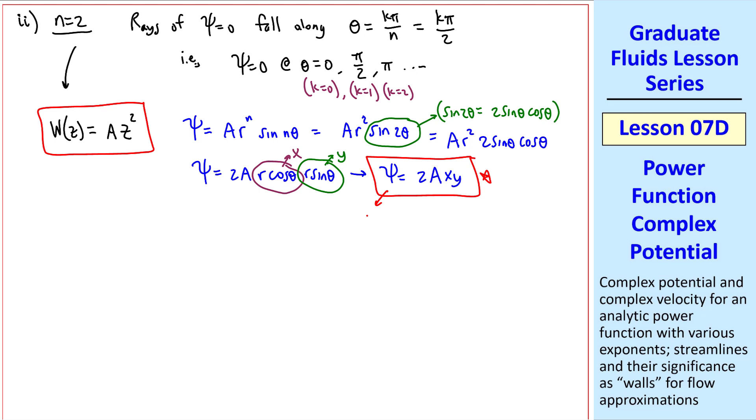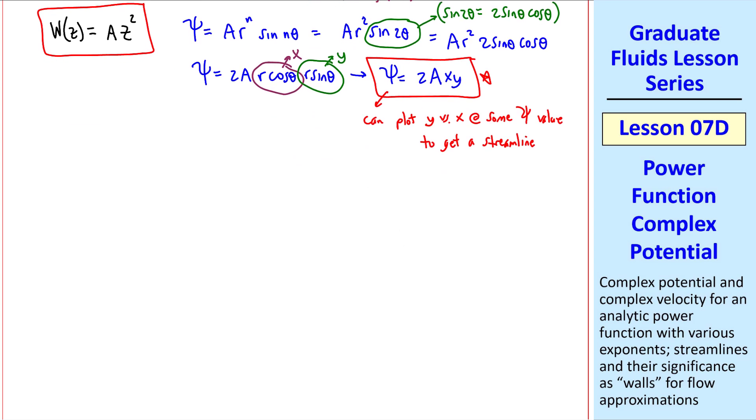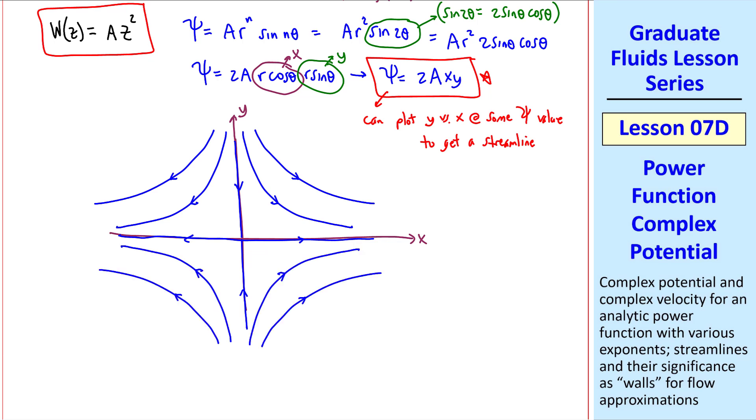In all these cases, once we have psi, we can plot y versus x at some psi value to get a streamline, and then repeat this for different values of psi, keeping a constant. When we do that for several values of psi, we get these streamlines. Both axes are streamlines, and the flow comes down from the top and turns 90 degrees to the right. This flow is mirror-imaged about the y-axis, and it's also mirror-imaged about the x-axis. When k equals 0, theta equals 0, and this is our first psi equals 0 ray, or streamline. When k equals 1, theta is pi over 2. When k equals 2, theta equal pi. And finally, when k equals 3, theta is 3 pi over 2. All of these rays in the 90 degree directions are psi equals 0 streamlines.